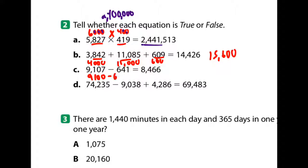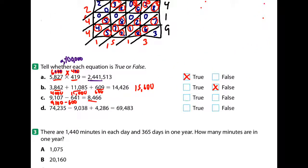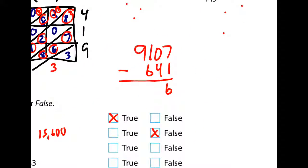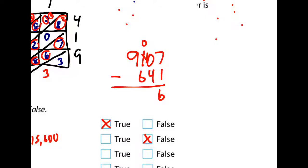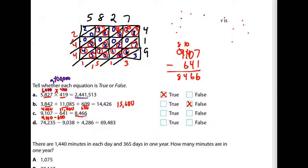Next one: if I estimate nine thousand one hundred minus six hundred, that's going to get me about eighty-five hundred — and that's pretty close. It's too close for comfort, so I'm actually going to subtract that one. Nine thousand one hundred seven minus six hundred forty-one. I have to do some borrowing: ten minus four is six, ten minus six is four, eight minus nothing is eight — and that one is true.